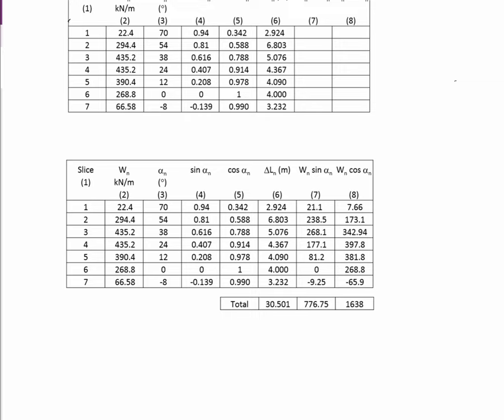Okay, I've gone ahead and filled the whole table in. But it should be self-explanatory. This column, column 7, is W sine alpha. W in column 2, sine alpha in column 4. This L column, this W, cos alpha. Same thing, cos alpha in 5, W in 2. Go through and multiply them out.